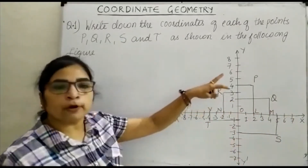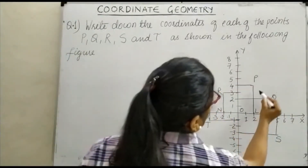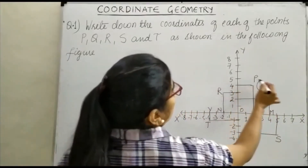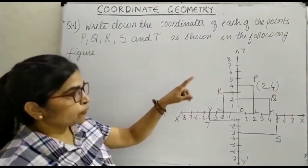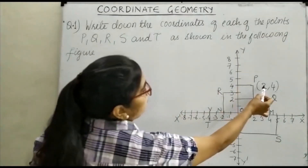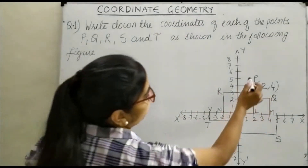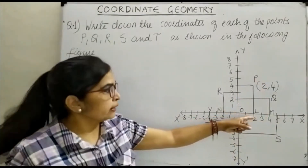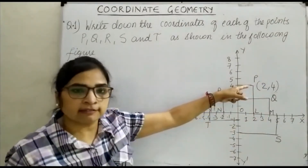Let us focus on point P. The x-coordinate of point P is 2 and the y-coordinate of point P is 4. So the coordinate of P is (2, 4). That means point P is 2 units away from the y-axis and 4 units away from the x-axis.